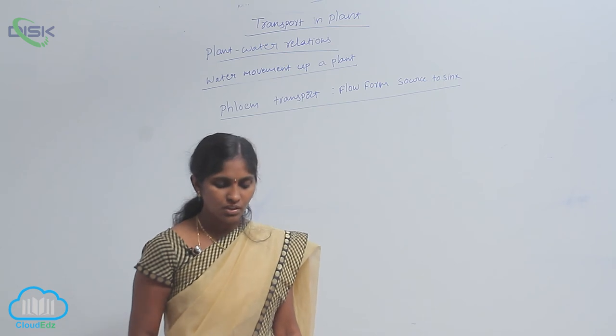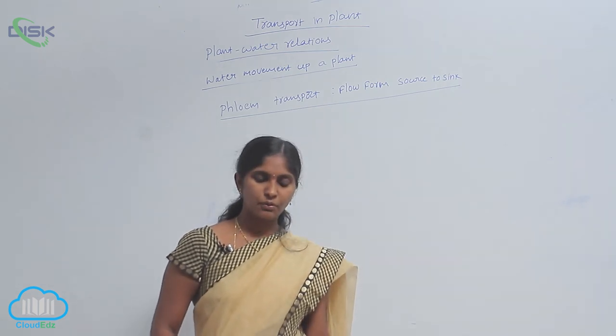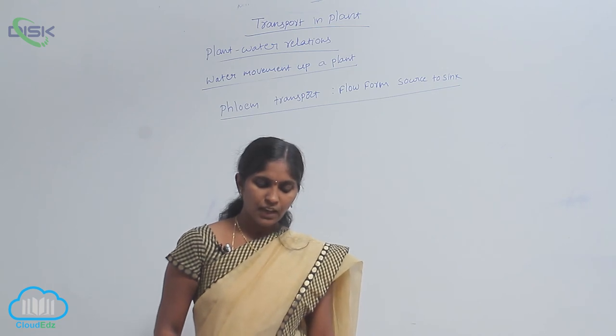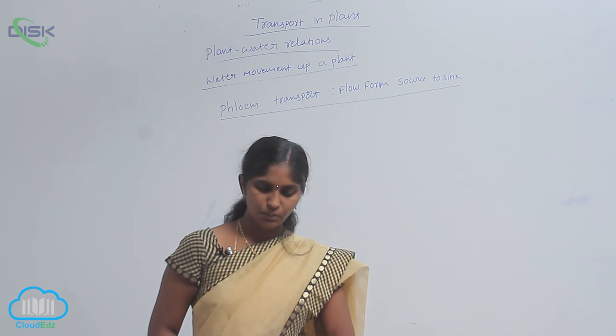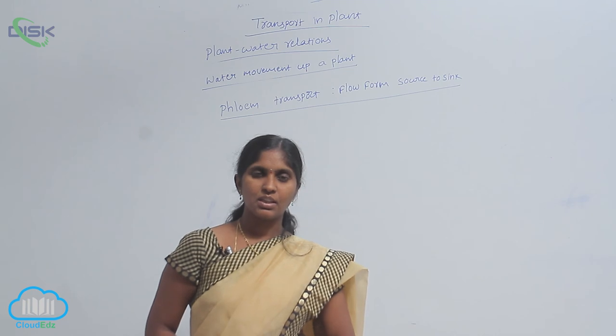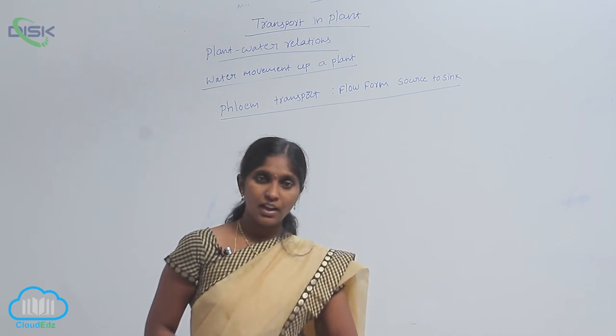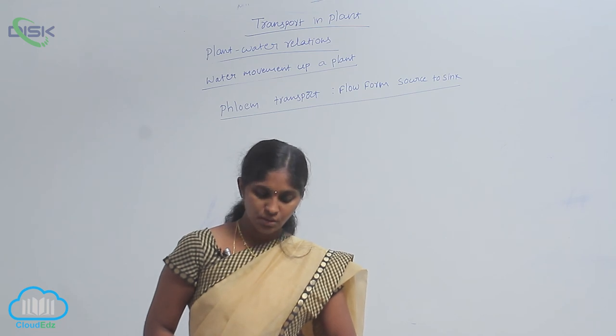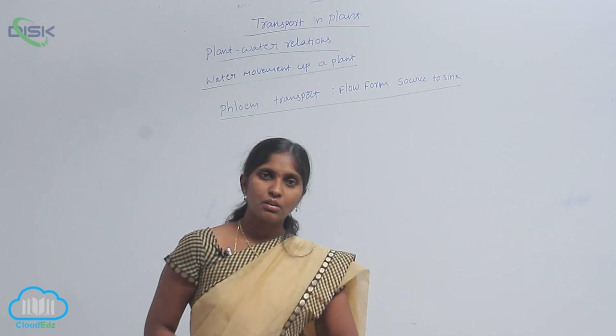The sucrose comes out from the phloem sap and the sugar molecules are converted into simpler forms, releasing energy. Gradually, the sugar concentration decreases, osmotic pressure also decreases, and finally the water moves out into the xylem.